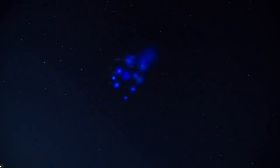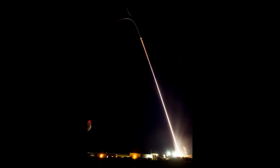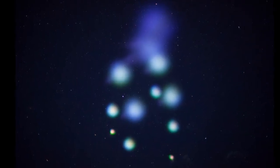A NASA Terrier-Improved Malmute Sounding Rocket was successfully launched on June 29 from NASA's Wallops Flight Facility in Virginia. The rocket flew to an altitude of about 118 miles.